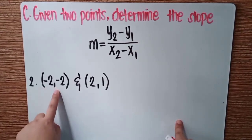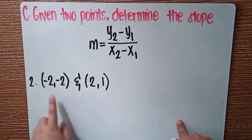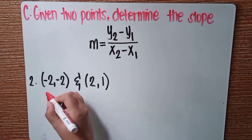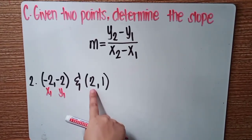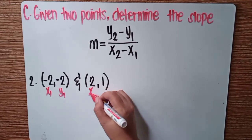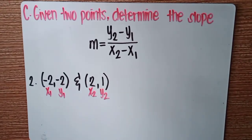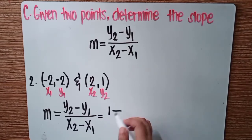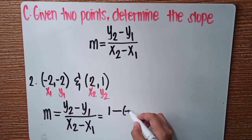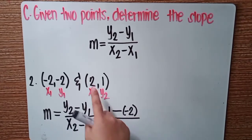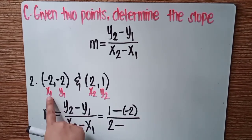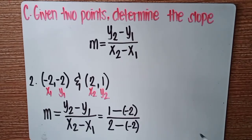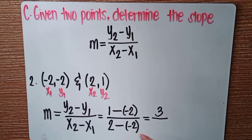Example number 2: the points are (−2, −2) and (2, 1). The first point (−2, −2) is marked as X sub 1 and Y sub 1. The second point (2, 1) is marked as X sub 2 and Y sub 2. Copy the formula, then substitute. Y sub 2 is 1, minus Y sub 1 which is negative 2, over X sub 2 which is positive 2, minus X sub 1 which is negative 2. Simplify: 1 minus negative 2 is positive 3, over 2 minus negative 2 is positive 4. The slope is equal to 3 fourths.